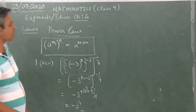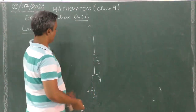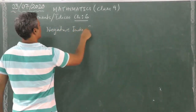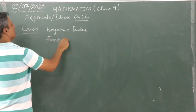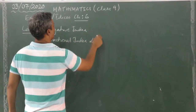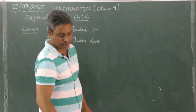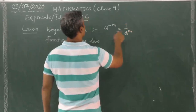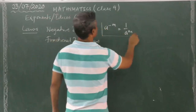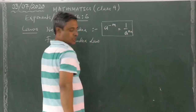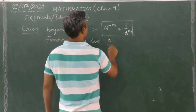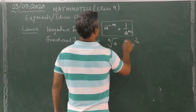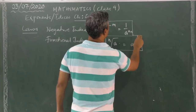Moving on, we now look at the Negative Index Law and Fractional Index Law together. The Negative Index Law says: a to the power of minus m equals 1 divided by a to the power of m — a negative power in the numerator becomes a positive power in the denominator. The Fractional Index Law says: the nth root of a can be written as a to the power of 1 by n.